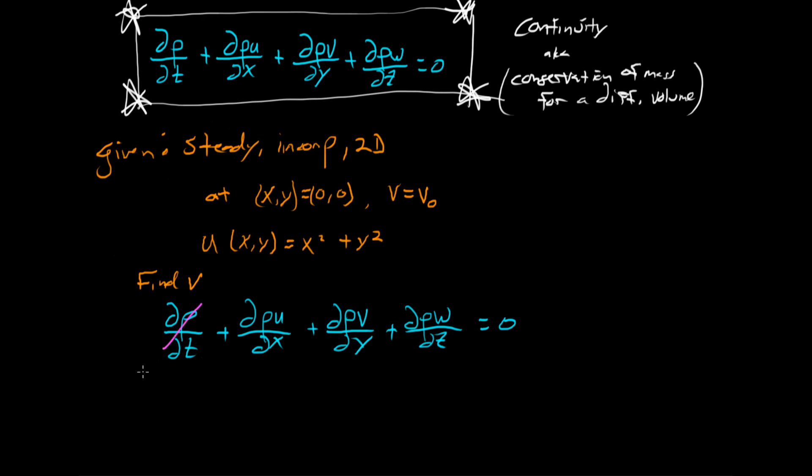First off, it's steady. That lets us get rid of the time derivative. It's incompressible. That lets us get rid of the densities. They all pull out of the derivatives, and then we can divide it out. And since this is zero over here, they just go away.